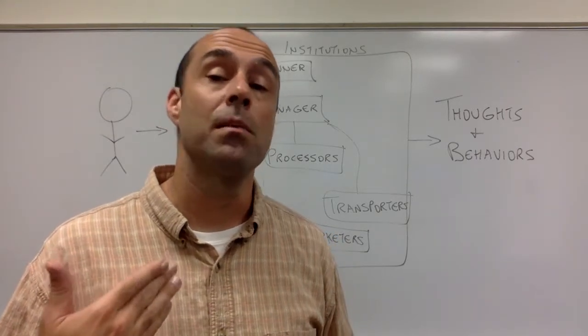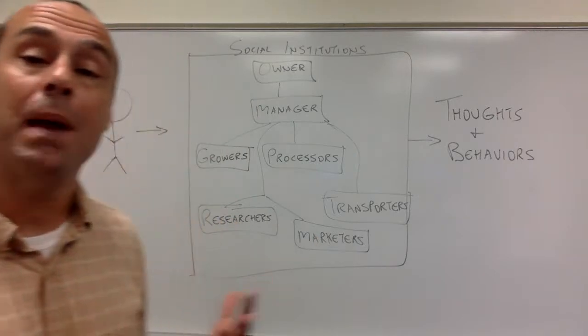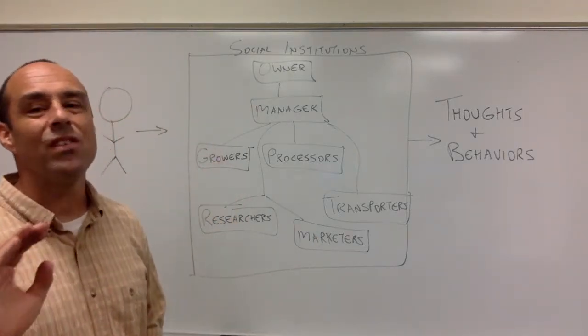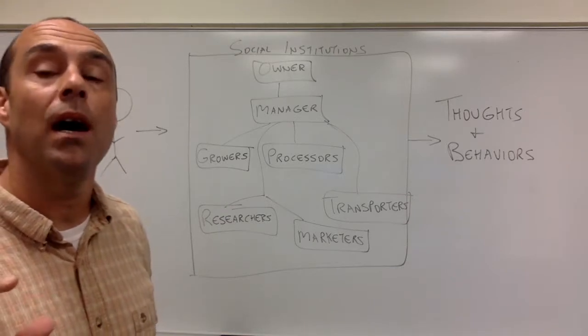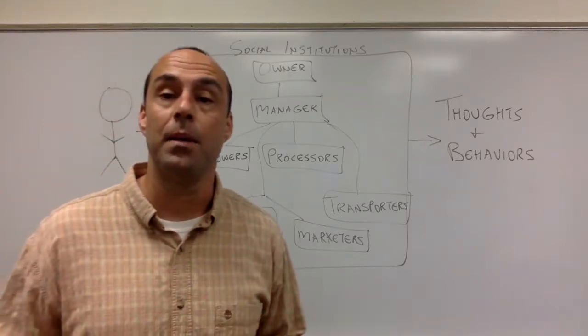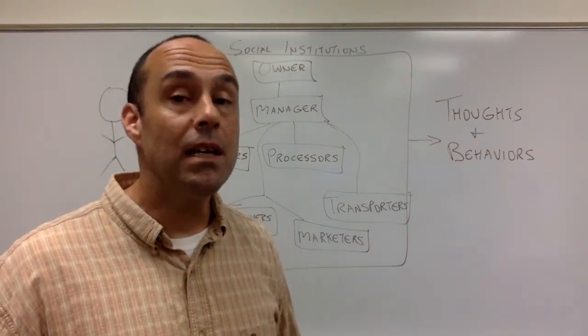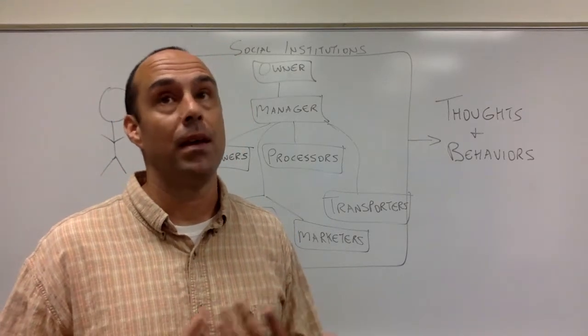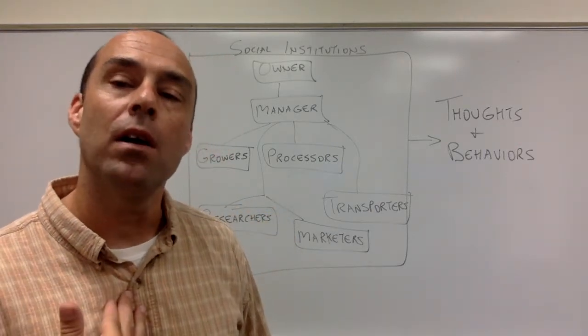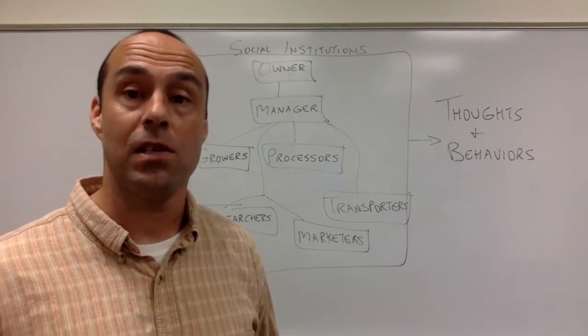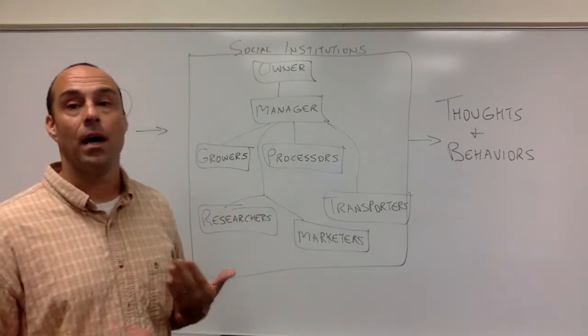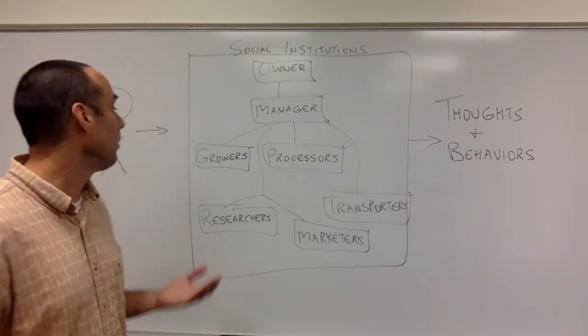Now where we are going someplace different now is we are expanding the category of labor to deal with, again, this is an oversimplification, but to deal with the specific tasks necessary for an economy. So an economy deals with, an economy is a patterned way of meeting needs. Now what are the patterned ways that we meet our needs for food in our society? Well, it begins the way any agricultural society would begin with farmers.